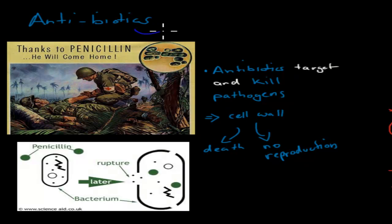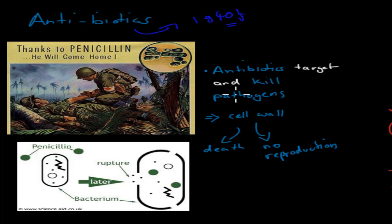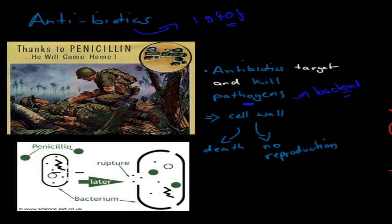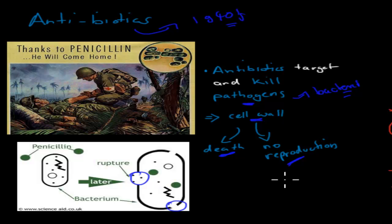Another example would be antibiotics. Antibiotics became really popular in the 1940s during the Second World War, because soldiers were getting hurt in battle and many people were dying from their infected wounds. People developed antibiotics, which target pathogens — but more specifically, they only target bacteria. For example, penicillin would be injected to target the cell wall of a bacteria and rupture it, causing death to the bacteria directly, or preventing it from reproducing.